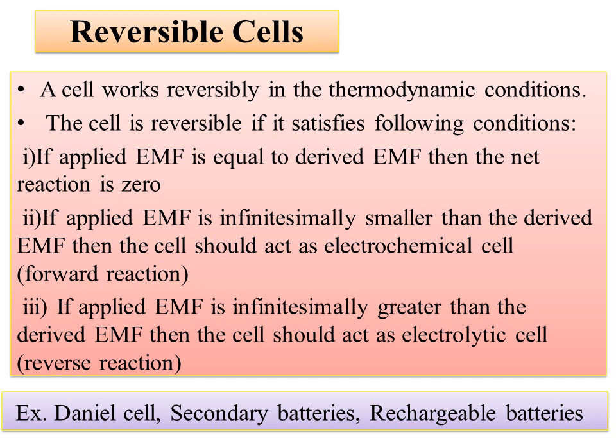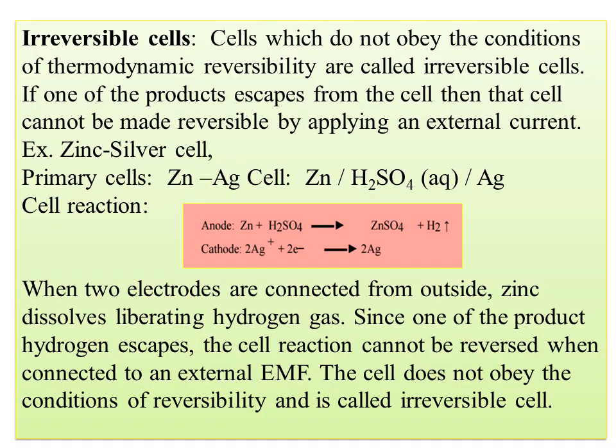If a cell satisfies these conditions, it will be a reversible cell. For example, DNA cells, secondary batteries, and rechargeable batteries are reversible cells. Cells which do not obey these conditions are called irreversible cells. If one of the products escapes from the cell, that cell cannot be made reversible by applying an external current. For example, zinc-silver cells are primary cells.